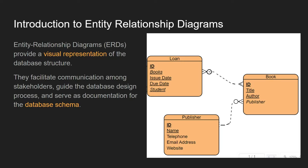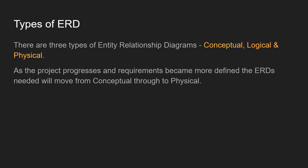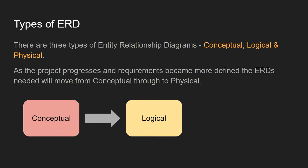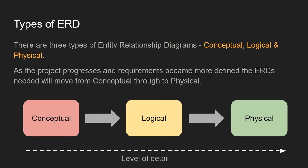They guide the process through to analysis and development, all the way through to the maintenance phase where they serve as documentation for the database schema. There are three different types of entity relationship diagrams, and as we progress from the conceptual through to the logical and physical, these diagrams become more and more detailed.